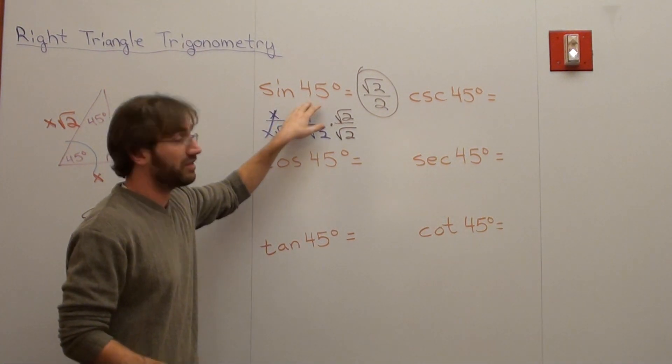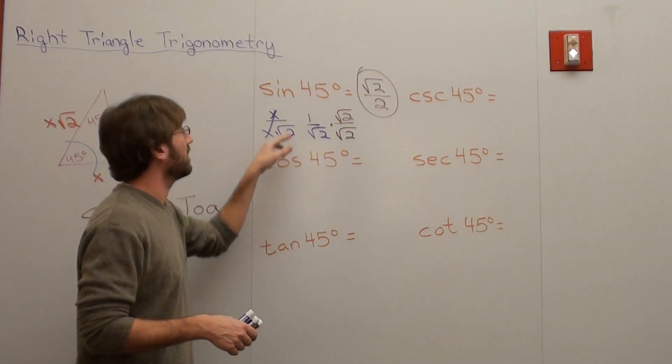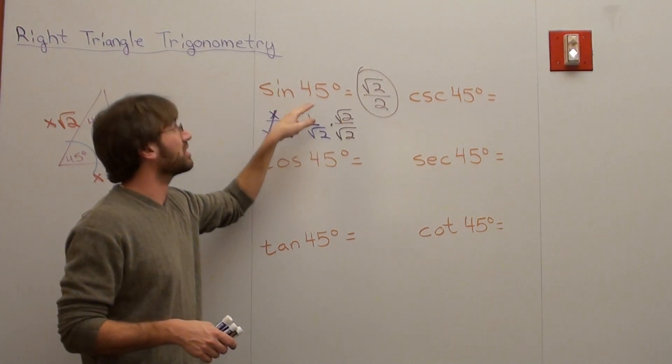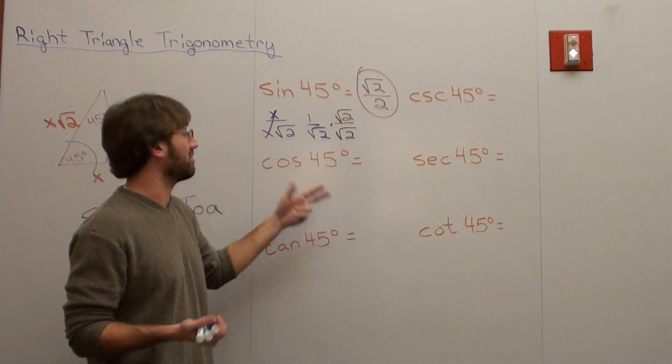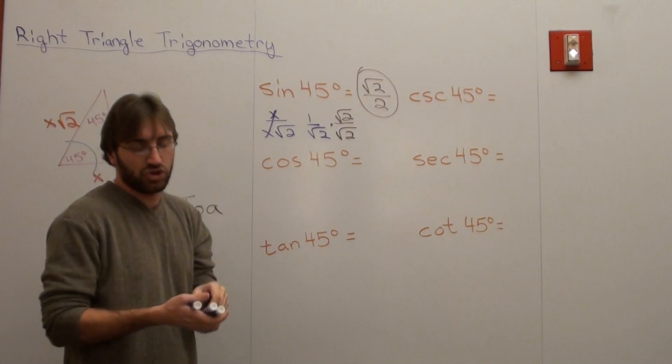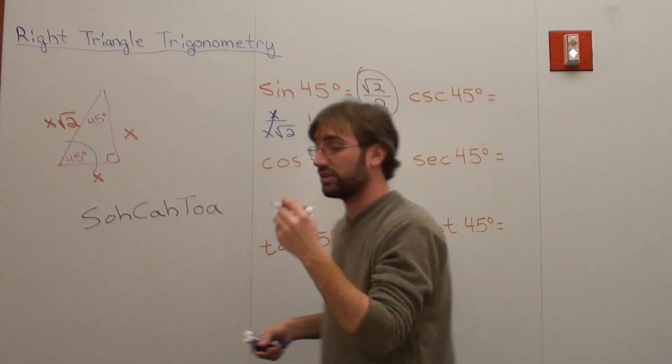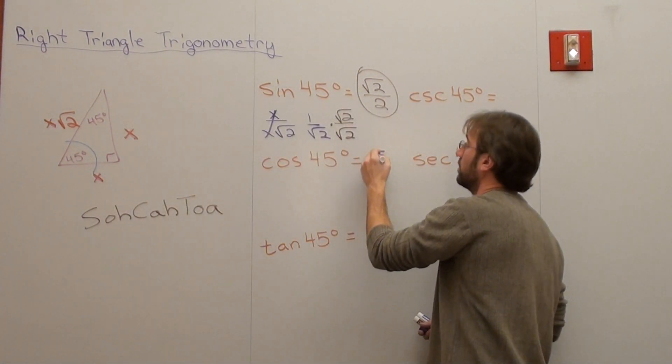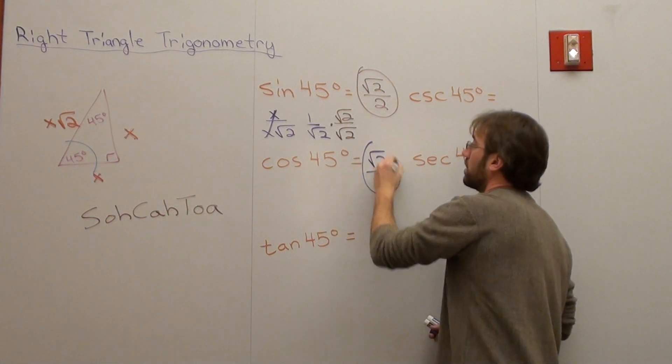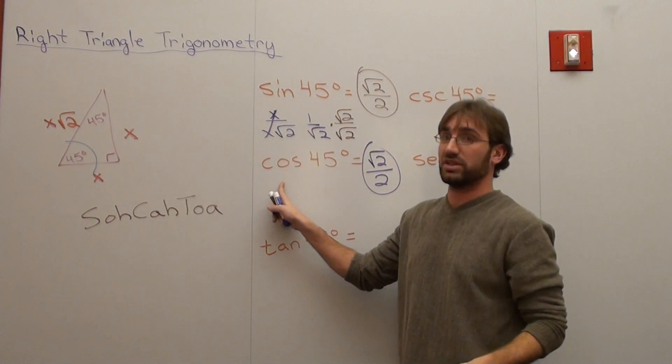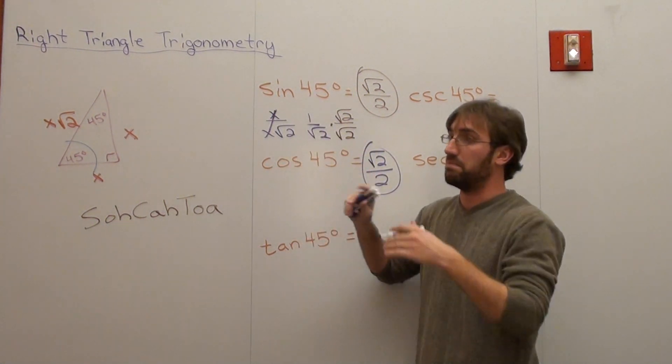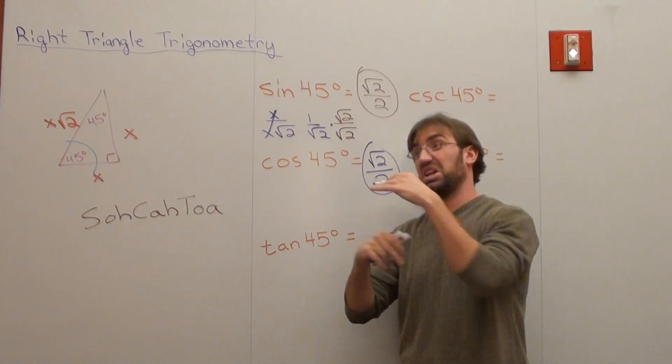Sine of 45 degrees, its co-function is the cosine. Now, what angle is complementary to 45 degrees? It's 45 degrees. Without even trying, I already know that the cosine of 45 degrees is root 2 over 2 because these are co-functions and that's its complementary angle. Bam. Without even doing any work whatsoever.